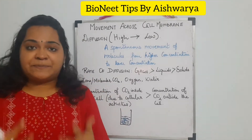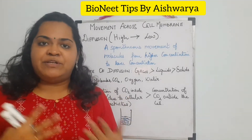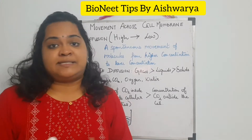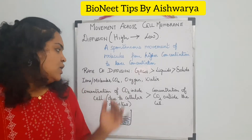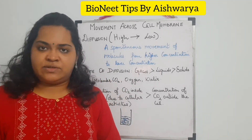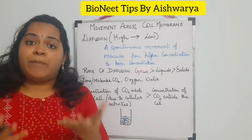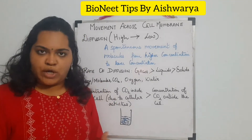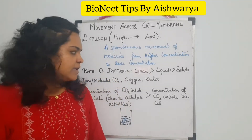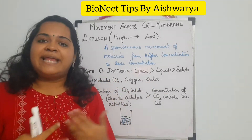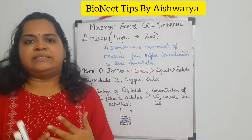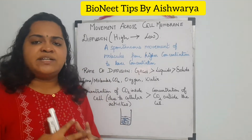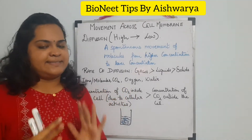Now, considering the type of substances that move inside the cell — considering their concentration and mass — we can say that ions, molecules, gases like carbon dioxide, oxygen, and water easily move throughout the cell through the process of diffusion.